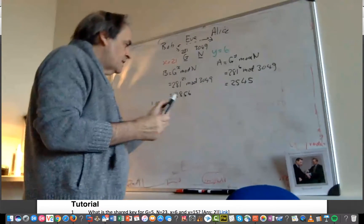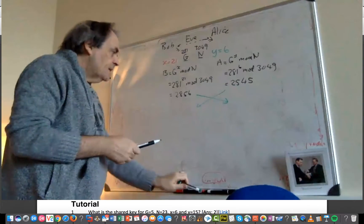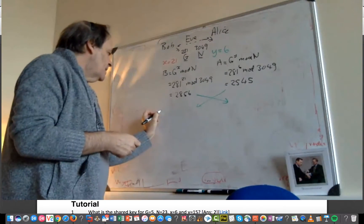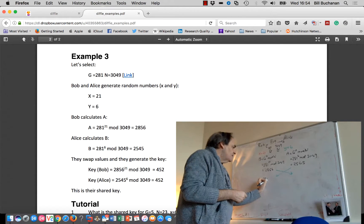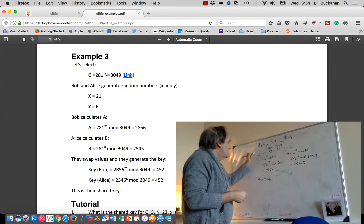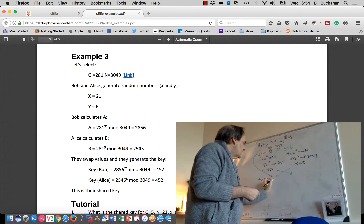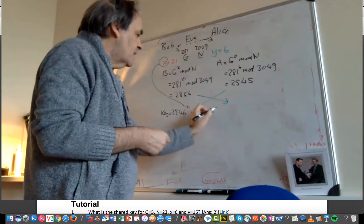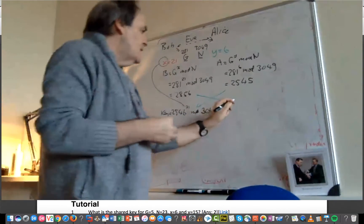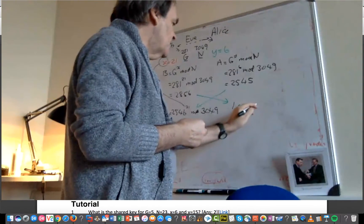They then send these values over to each other. And then Bob, to calculate the key, takes 2545, then takes the X value that he keeps secret, and then takes the mod of 3049.